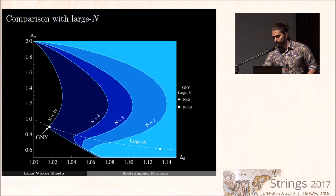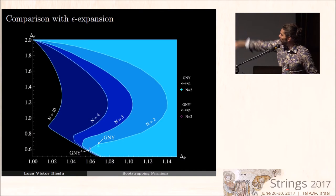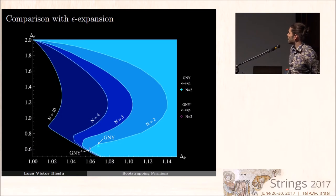However, there's another tool, which is the 4 minus epsilon expansion. The top kink there, you see, it's very close to the 4 minus epsilon expansion results for the Gross-Neveu-Yukawa model for N equal 2. That's pretty strong evidence that the top kink is actually the theory that we're looking for.